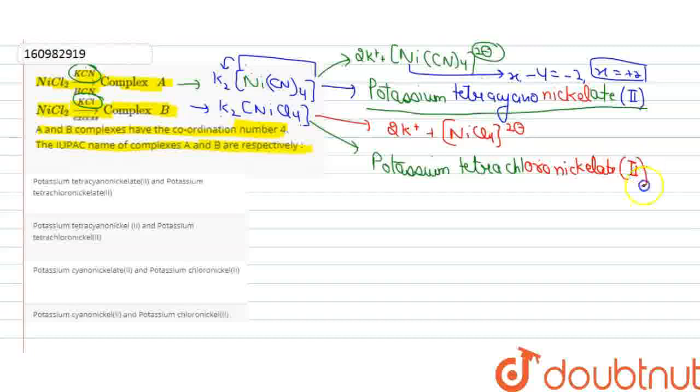This is the 2 oxidation state and chlorine is the charge minus 1, so the same thing. X minus 1 is equal to minus 2, and x plus 2 will be 2. So this is the potassium tetracyanonickelate and potassium tetrachloronickelate. This is the correct option, that is A. Thank you.